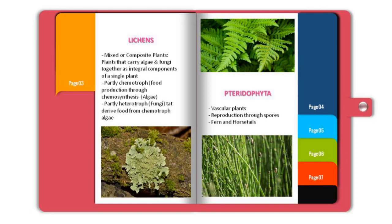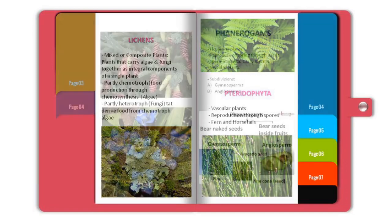Then there is pteridophyta. Pteridophyta are vascular plants. They reproduce through spores. Fern and horsetails are the examples. Ferns you can easily identify on the top, while the picture at the bottom shows horsetails.